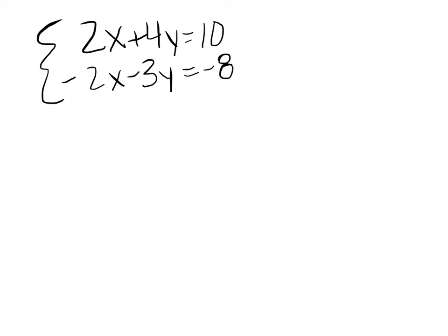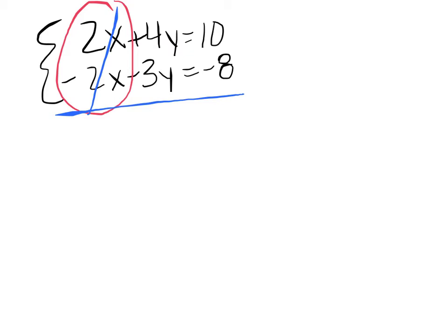Here's a system with variables: 2x plus 4y equals 10, and negative 2x minus 3y equals negative 8. If we want to solve using elimination, we need to have opposites. The first thing I need you to do is look for opposites. I see 2 and negative 2 with the x's, so we can go ahead and solve this system using linear combination, also known as elimination — just combine the two equations. 2x minus 2x is 0, they cancel out. 4y minus 3y is 1y. 10 minus 8 is 2. We have the first half of our solution: y equals 2.